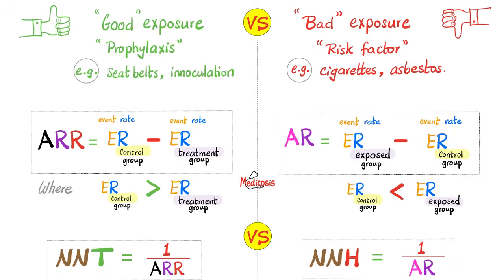Good exposure is prophylaxis; bad exposure is a risk factor. Seat belts prevent injuries; vaccinations prevent infectious diseases. Risk factors like cigarettes and asbestos can increase the risk of cancer. When exposed to a good thing, it reduces your risk — so we use absolute risk reduction, which is event rate in the control minus event rate in the treatment group. For attributable risk, it's the opposite: event rate in the exposed group minus event rate in the control group, because the exposed group has the bigger number. The reciprocal of absolute risk reduction is number needed to treat; the reciprocal of attributable risk is number needed to harm.